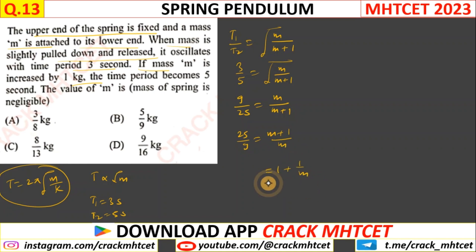Split is 1 plus 1 by m. So this is 25 by 9 minus 1 by m. So this is 16 by 9, 1 by m. And then m is 9 by 16.